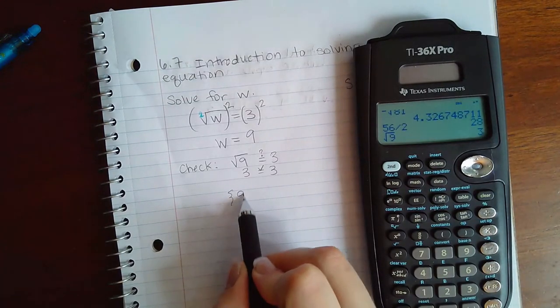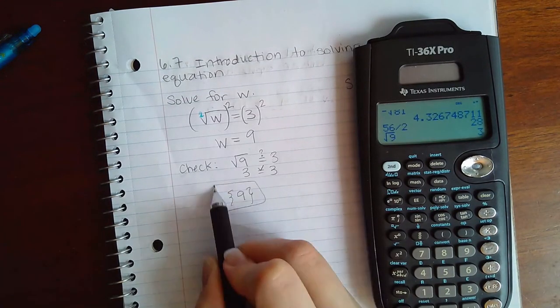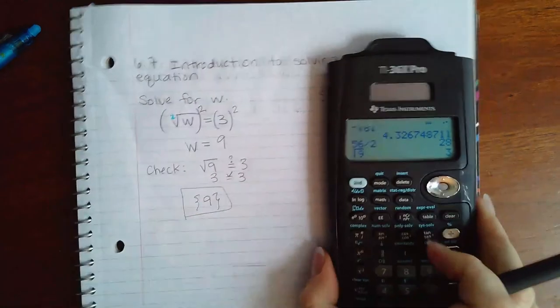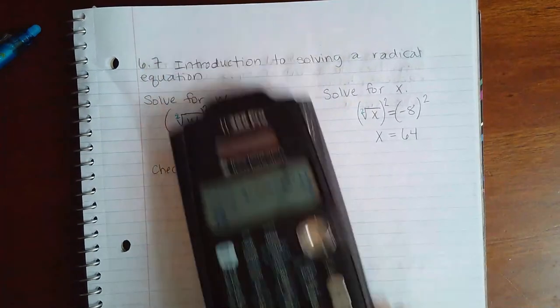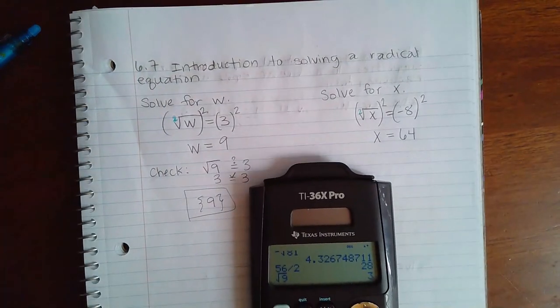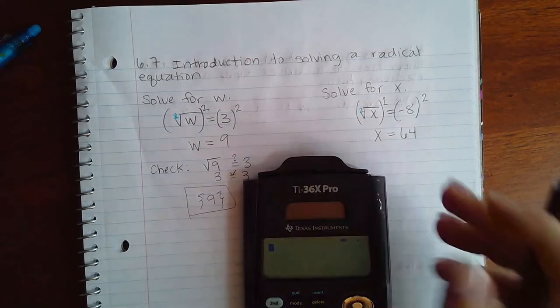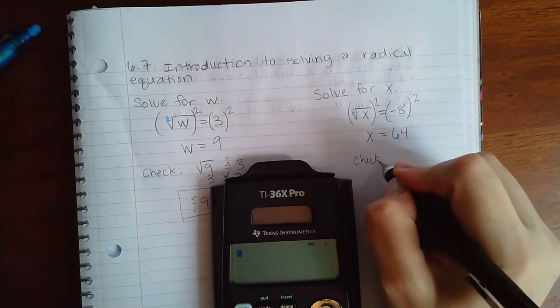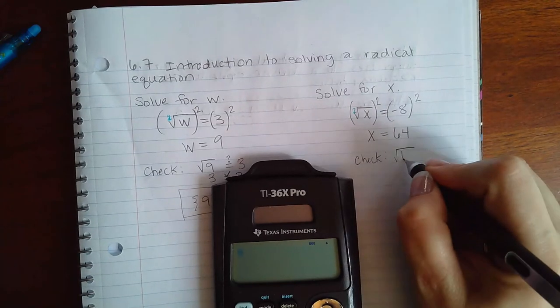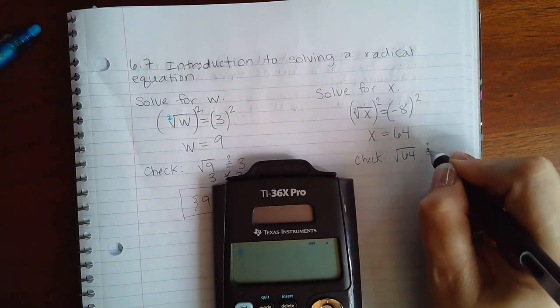Here however, if we go over here to the other side, when I go to try to check that one I would plug it in. So the square root of 64, is that equal to negative 8?